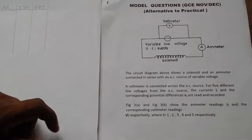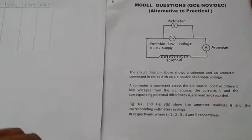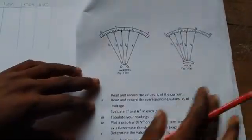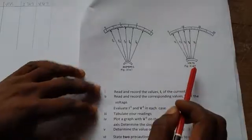The readings of the voltmeter and the ammeter is presented in the diagram here. This is the ammeter reading. As you can see, the scale, this is the ammeter reading, and this is the voltmeter reading.